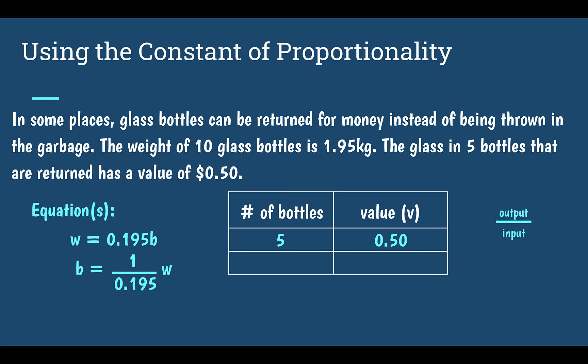...divide 50 cents by five — that would mean each bottle is worth 10 cents. So I would take my number of bottles and multiply that by 10 cents. My value V would be equal to 0.1, or 10 cents, times B.